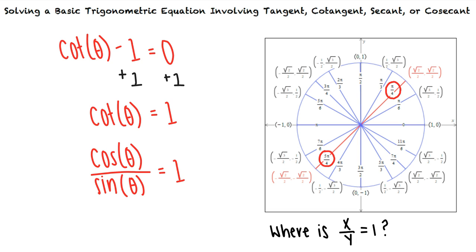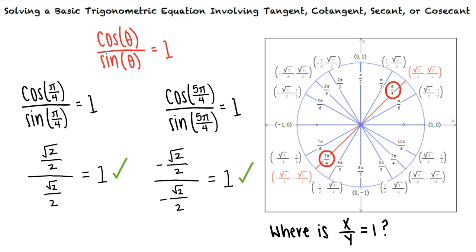How can I be sure these solutions satisfy the equation cotangent theta minus 1 equals 0? We can substitute these angles into the equation to check. When we check our answer, we see that these angles satisfy the equation. Additionally, any angles coterminal with pi-fourths or 5 pi-fourths will also satisfy the equation.